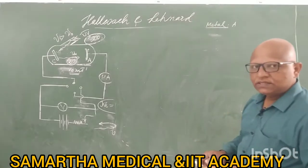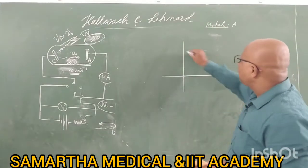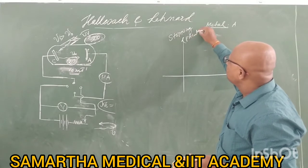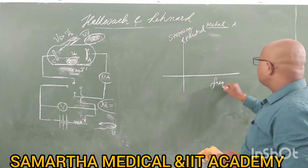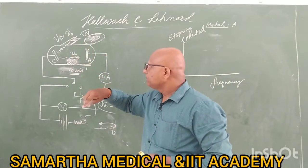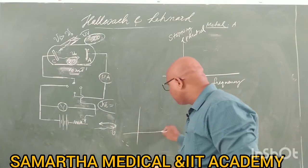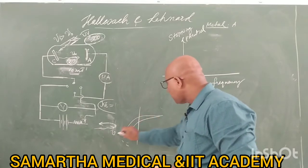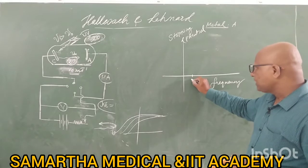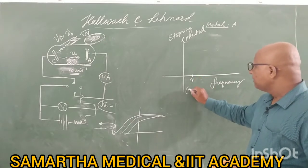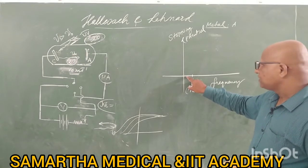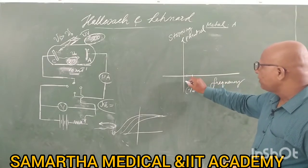Last but not the least, we will discuss the kind of graph plotted between stopping potential versus frequency of the light used. Because we have seen that if you change frequency, stopping potential changes. That is why, for what kind of frequency? It is more than threshold — nu greater than nu 0. If you try frequencies less than nu 0, then photoelectric effect is not possible. You have to try the frequency which is greater than nu 0.